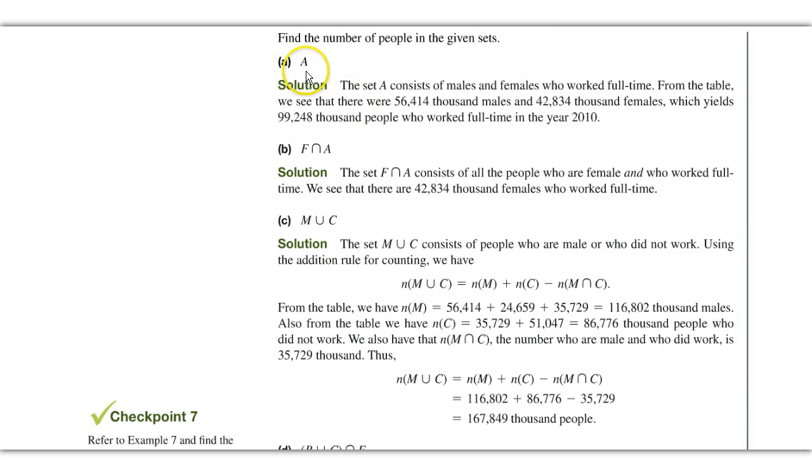They are starting us off easy. We want to see how many are in set A. Well, looking at our chart, we see there are this many thousand males and this many thousand females, which are working full-time, which gives you this total. Now, in example B, we want to see the intersection of F with A. Well, set A are those who worked full-time. And F are the females. So the intersection is just the number, again, of females who worked full-time. So this is a straightforward number, which is the same as we have up here.